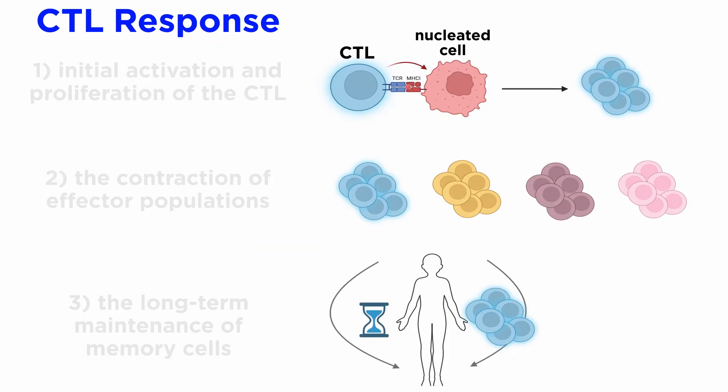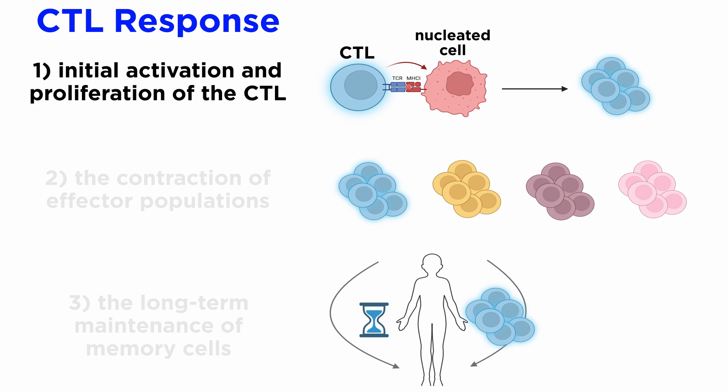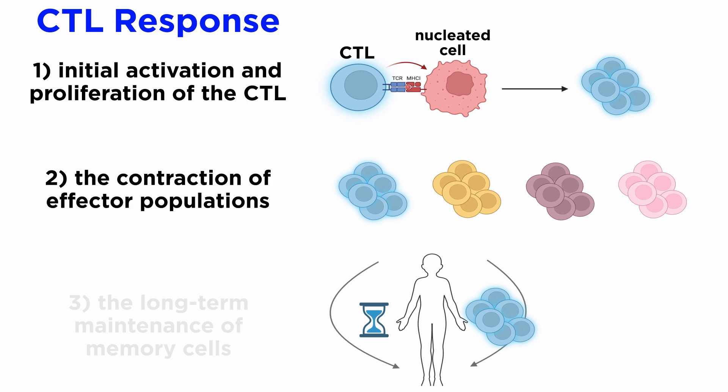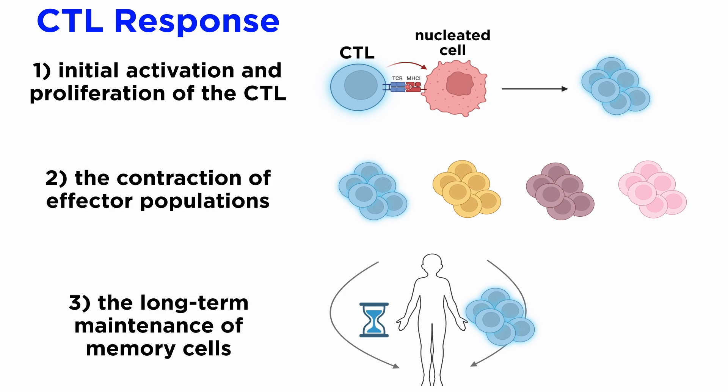The CTL response to an acute infection consists of three phases. First, the initial activation and proliferation of the CTL. Second, the contraction of effector populations. And third, the long-term maintenance of memory cells.